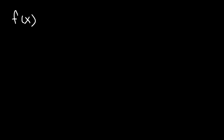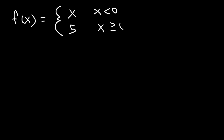In this tutorial we're going to focus on graphing piecewise functions. Let's start with this particular example. f of x is equal to x when x is less than 0, and it's equal to 5 when x is equal to or greater than 0.